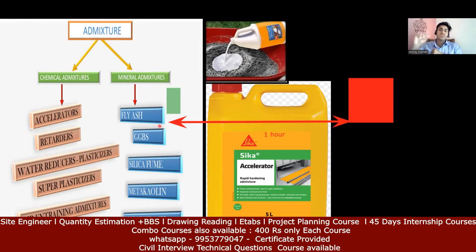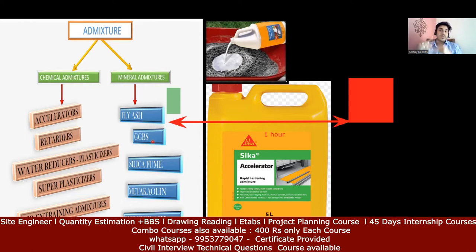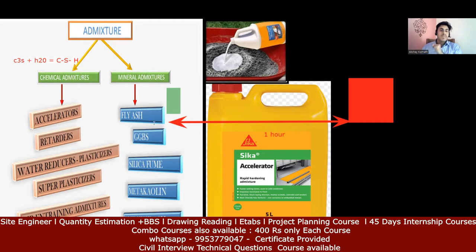Fly ash and GGBS are very fine in nature and difficult to dispose of — they require huge land and storage silos, and if they come in contact with air they cause problems for human beings. The best solution is to mix them with cement. Fly ash alone has no binding property, but when mixed with cement it gives more binding property. You may recall that tricalcium silicate reacts with water to form CSH gel, which gives binding property. When you add fly ash and GGBS, more and more CSH gel is formed — that is the main advantage.